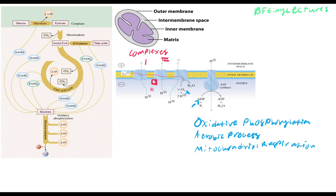The complexes are labeled in Roman numerals. Complex 4 is followed by what some textbooks call complex 5, but most people call ATP synthase. These proteins are located in the intermembrane space and take the cofactors NADH and FADH2 through a series of reactions, generating hydrogen ions in the intermembrane space. That creates a gradient with a voltage, and those hydrogens will enter ATP synthase and generate ATP from ADP. The whole process of creating cofactors is ultimately to create ATP.